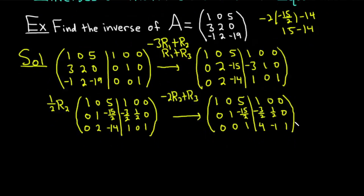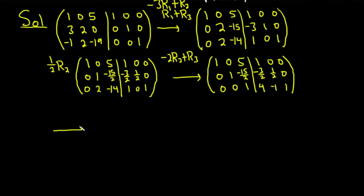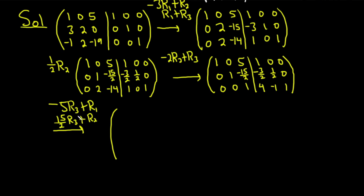Now we're going to finish up. We need to make the numbers above this 1 into zeros. We'll do negative 5 times row 3 plus row 1, and then 15 halves times row 3 plus row 2 — to get rid of the 5 and the negative 15 halves. Doing the first operation — negative 5 times row 3 plus row 1: 0 plus 1 is 1, 0 plus 0 is 0, negative 5 plus 5 is 0. Then negative 20 plus 1 is negative 19. 5 plus 0 is 5. Negative 5 plus 0 is negative 5.